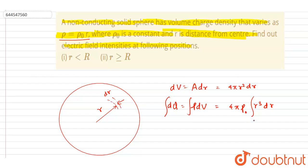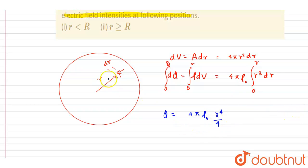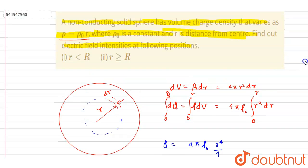Integrating both sides from 0 to r to get the enclosed charge, after integration we get Q equals rho naught times r to the power 4 divided by 4 (with the factor pi included). At the lower limit 0 the expression vanishes, so this is the charge enclosed by a sphere of radius r.